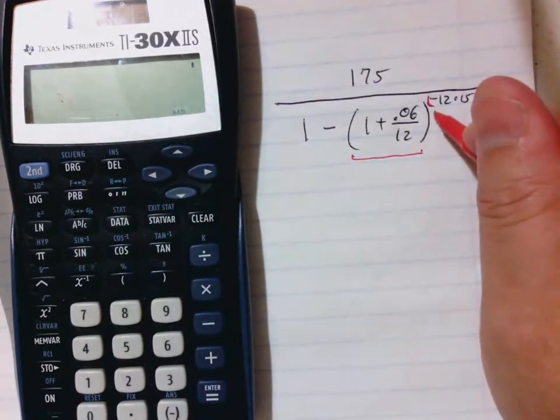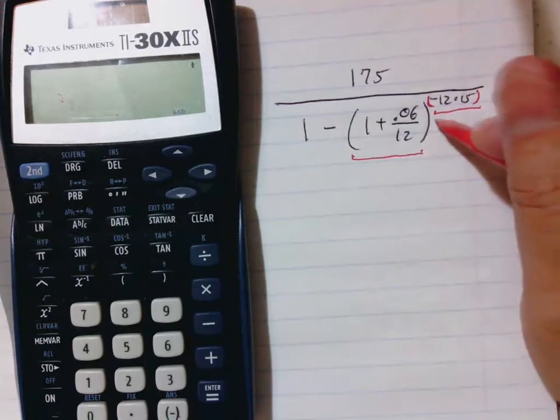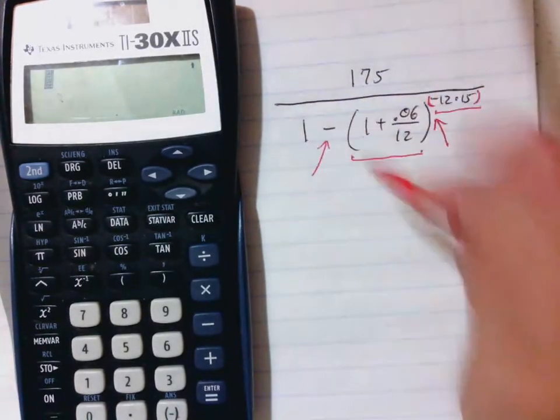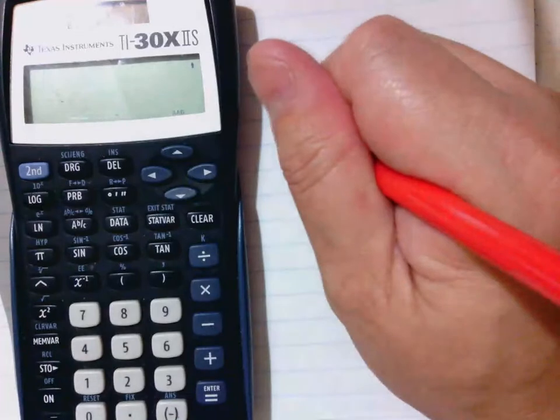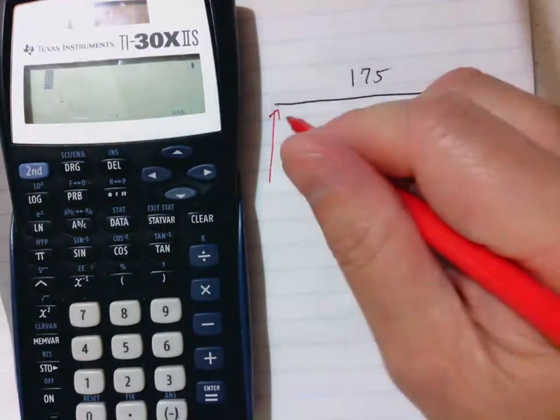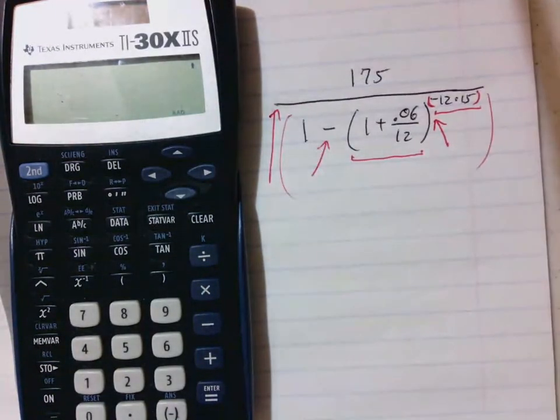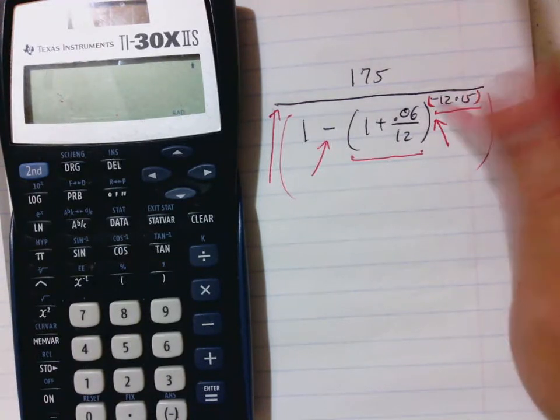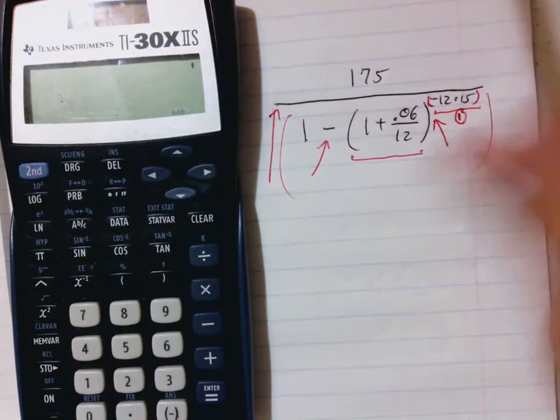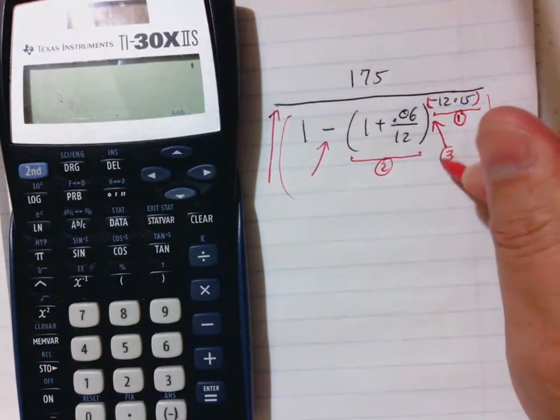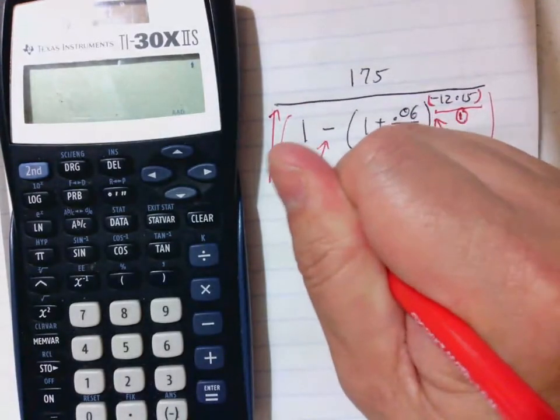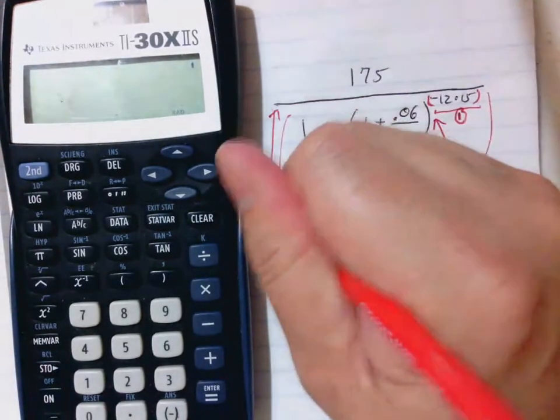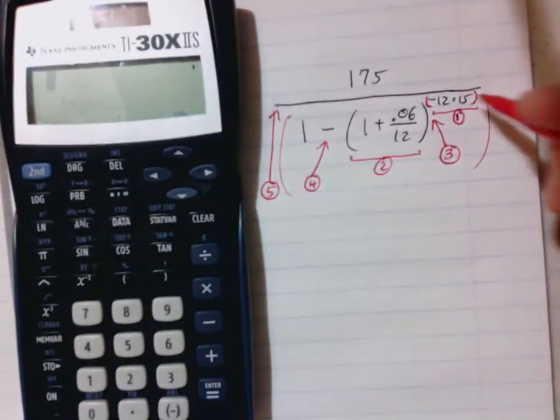So again, there is an implied grouping symbol here. These two grouping symbols will go first, followed by the exponential, followed by the 1 minus, and then this division will go last because there's a big implied grouping symbol for all of the denominators also. All right, so again, because this is one number and it's a simple calculation and it's a nice integer, I'm going to do this first, I'm going to do this second, the power will be third, the subtraction will be fourth, and the division will be fifth.